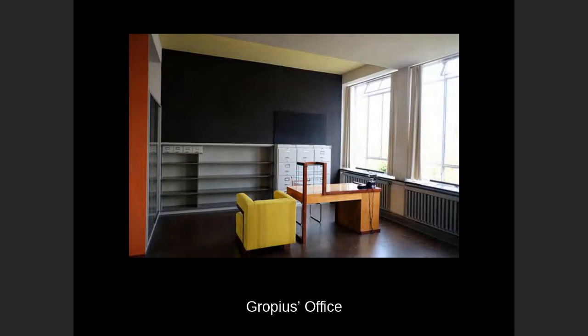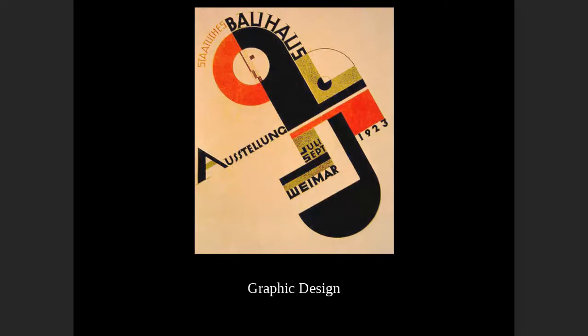This surprises people — when they think of international style architecture they think black and white. In many ways in the United States that became the popular aesthetic because all the images from the magazines and publications coming out of the Bauhaus in Europe were black and white. There wasn't much color photography published in the twenties and thirties. But it was actually quite colorful — much the same way we misinterpreted Greek architecture, thinking of stark white temples when in fact they were very brightly and boldly painted.